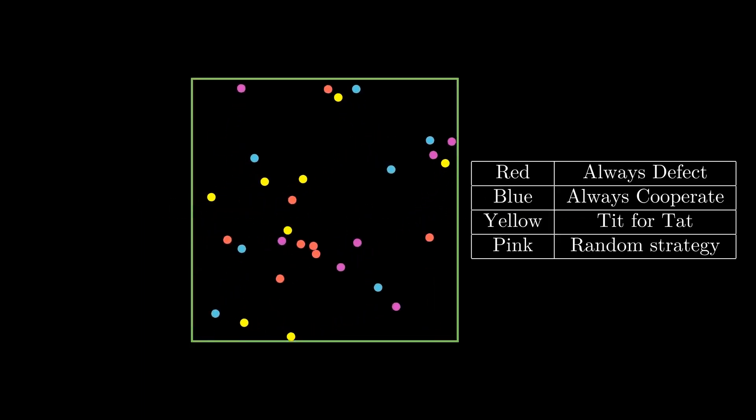Now, what could be the possible result of this particular simulation? Since we already saw that defect strategy when paired with tit-for-tat strategy in presence of a cooperative strategy loses a few reward points than it would normally do,